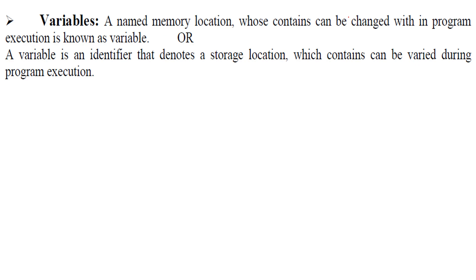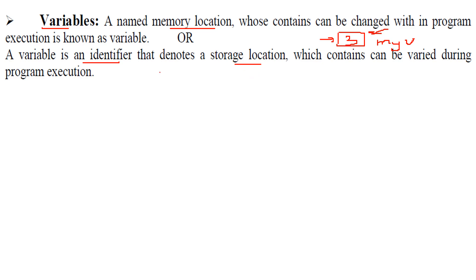Variables. Any memory location in memory is identified by a certain name. The content of that named memory location can change — for example, a variable named 'myV' can hold value 2 and then be changed to 3, which is why we call it a variable. The name comes from 'vary' — it can vary. A variable is essentially an identifier that denotes a storage location whose contents can be changed or varied during program execution.